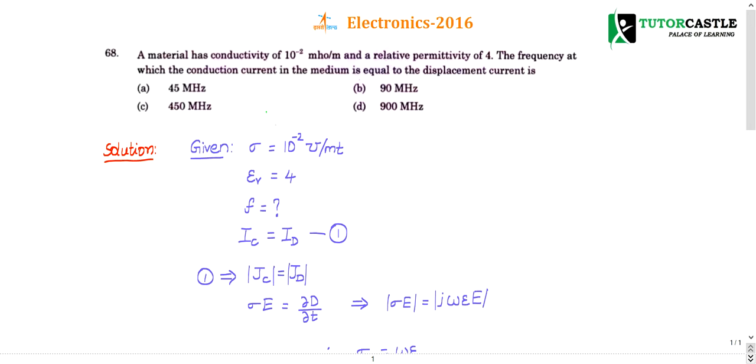Question number 68. A material has a conductivity of 10 power minus 2 Moh per meter and relative permittivity of 4. The frequency at which conduction current in the medium is equal to displacement current. If you know the formula for conduction current and displacement current, you can solve this question easily.